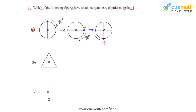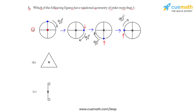Rotating again by 90 degrees clockwise, after 270 degrees total rotation, the blue dot moves to a new position. Rotating once more by 90 degrees brings us back to the original question figure. So after rotating 90 degrees four times, we return to the start — hence this figure has an order of rotation of 4.